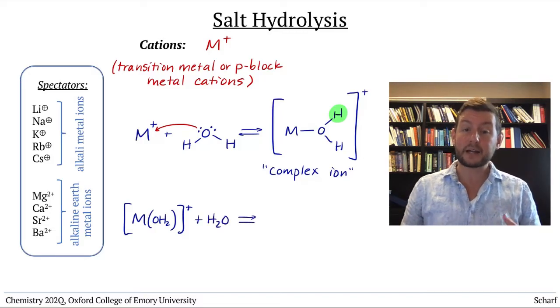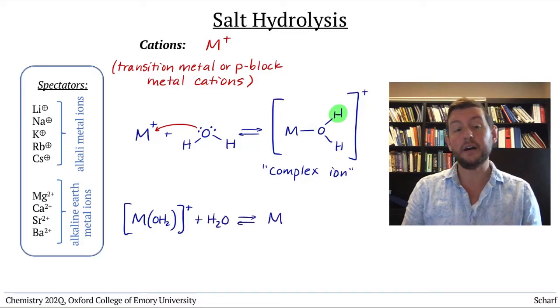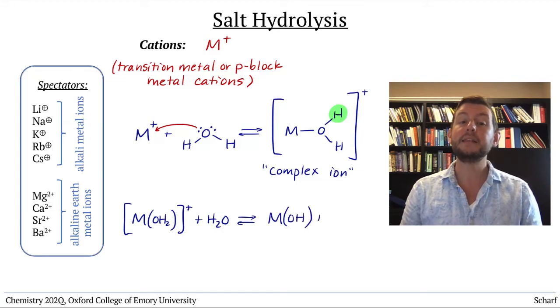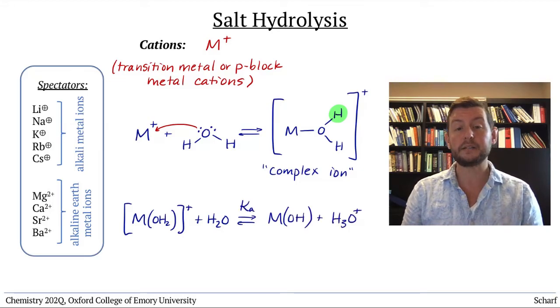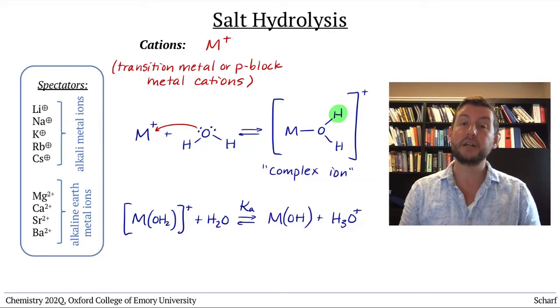The complex ion can react with water, just like any other Bronsted acid, making the ion's conjugate base and H3O+, thereby lowering the pH.